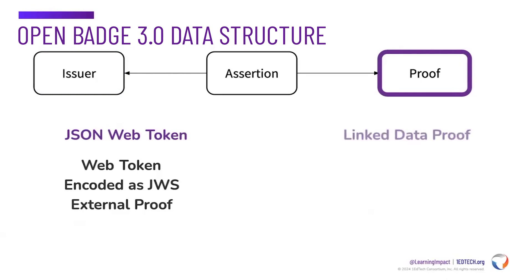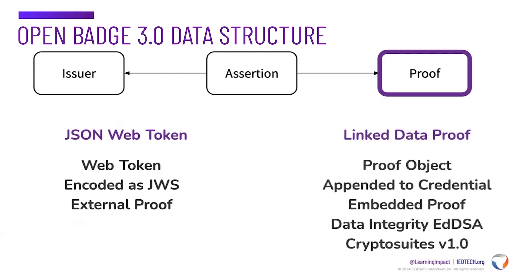The second proof format is the linked data proof. In this format, the credential is signed and the signature is used to form a proof object, which is then appended to the credential. These are called embedded proofs, because the proof is embedded in the data. Note, in order to opt for this format, you must use the Data Integrity EDDSA Crypto Suites version 1. At least one proof mechanism and the details necessary to evaluate that proof must be expressed for a credential to be verifiable. Multiple proof mechanisms may be used.